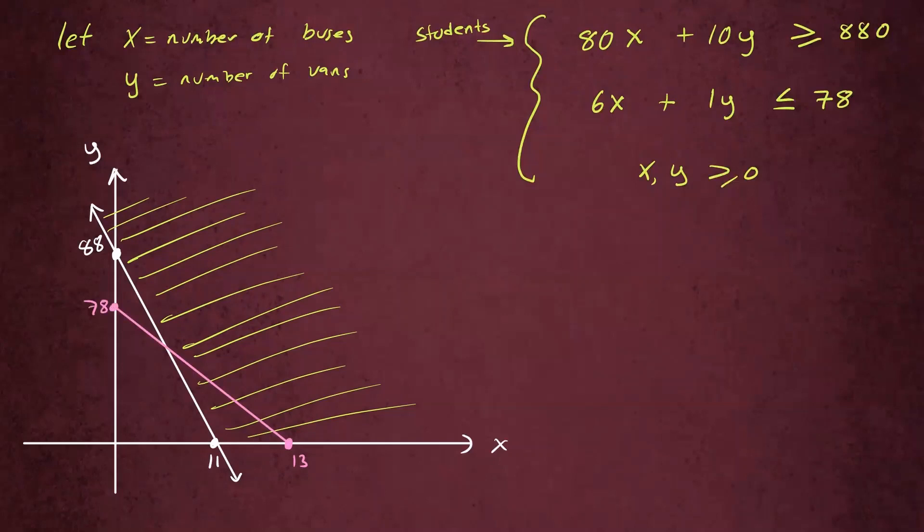And then let's shade in the region for that. Let's again pick the origin, plug it in here. 0 for x, 0 for y. 0 less than or equal to 78. That's true. So yes, we're going to shade in the lower half. So we're going to shade in this direction. And you see the region where the two shaded regions overlap is this triangular region right here. So I'm going to go ahead and shade that in as well. So that will be our feasible region.